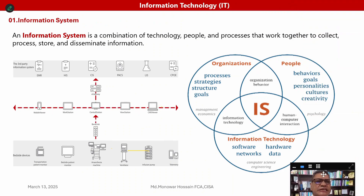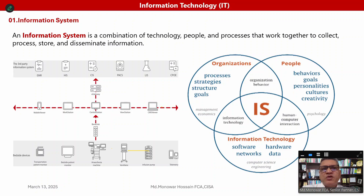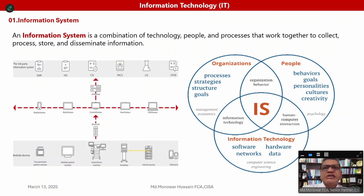What is an information system? An information system is a combination of technology, people, and processes that work together to collect, process, store, and disseminate information.